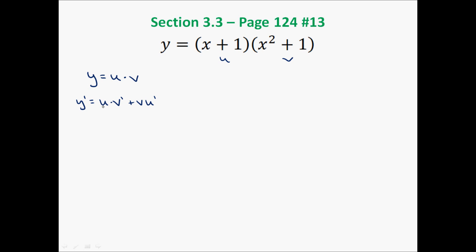So in other words, the first factor times the derivative of the second factor, plus the second factor times the derivative of the first factor. So if I want to find y prime, I'm going to take the first factor, x plus 1, times the derivative of the second factor. The derivative of x squared: the exponent goes out front, so it becomes 2x, and the exponent decreases by 1, going from 2 to 1. The derivative of 1 is 0, so I won't write that.